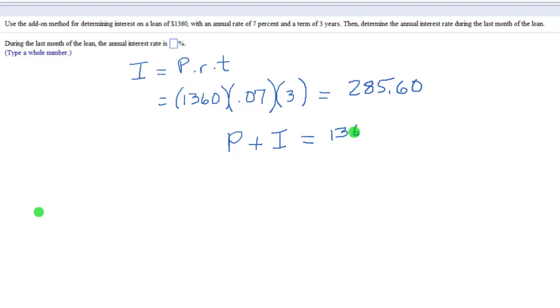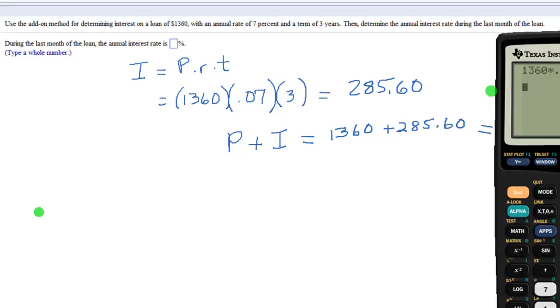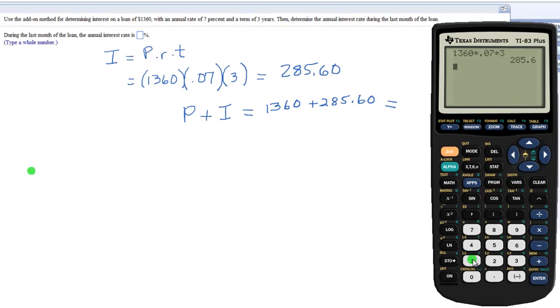So take your $1,360, add it to the loan. So that's the total amount, really, that's going to be due from this loan. That's what we have to pay the bank.